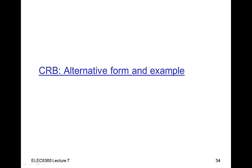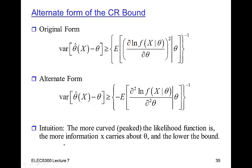This is part 6 of lecture 7 of LEC 5300. We're continuing our discussion of the Cramér-Rao bound. In the past part, what we saw was the original form of the Cramér-Rao bound, which was given by the expected value of the derivative of the log likelihood squared.